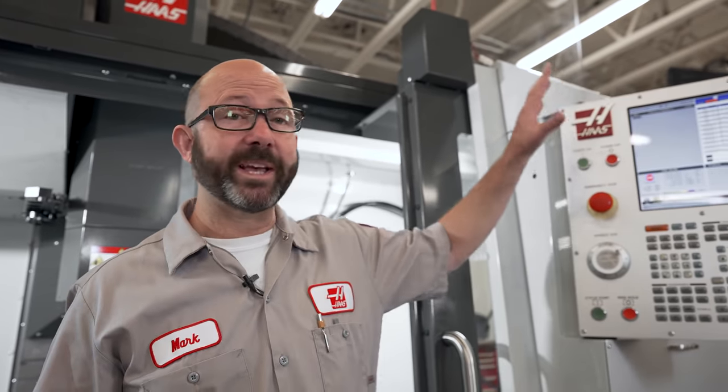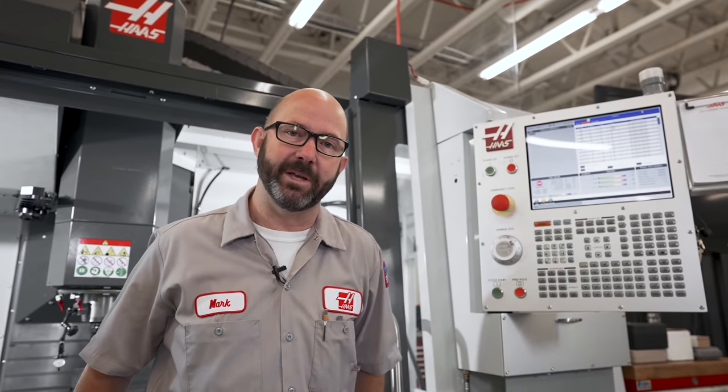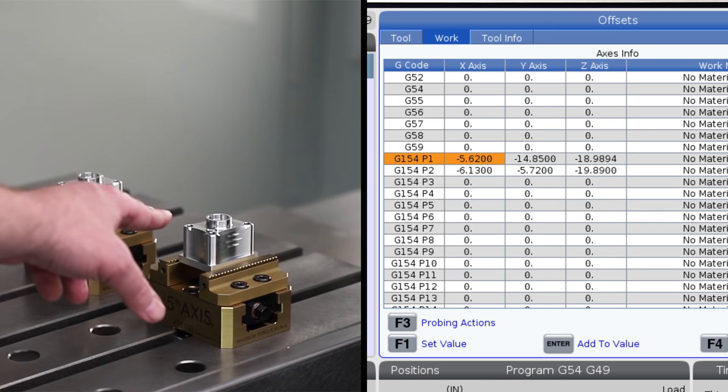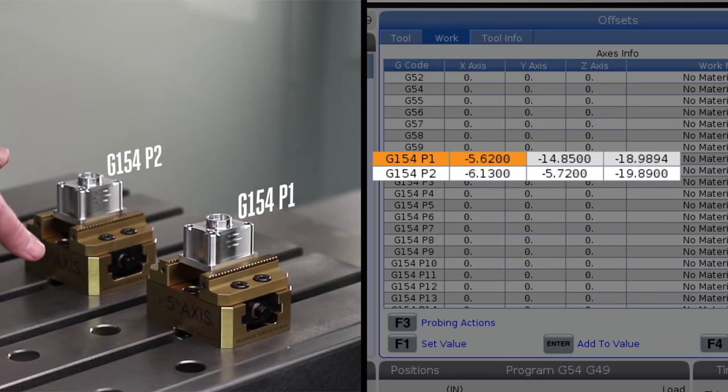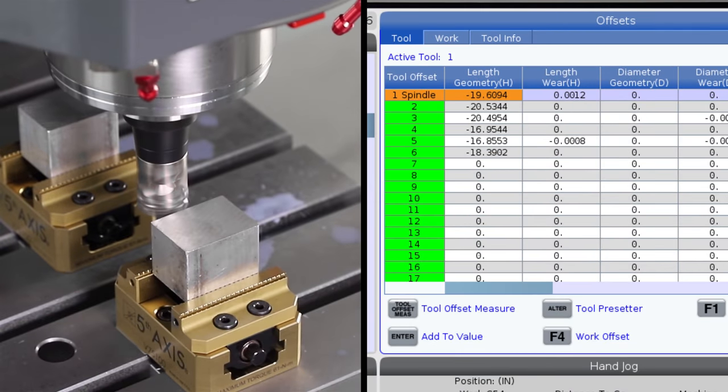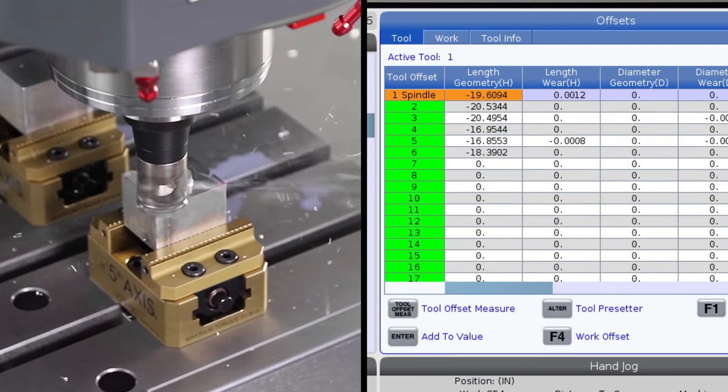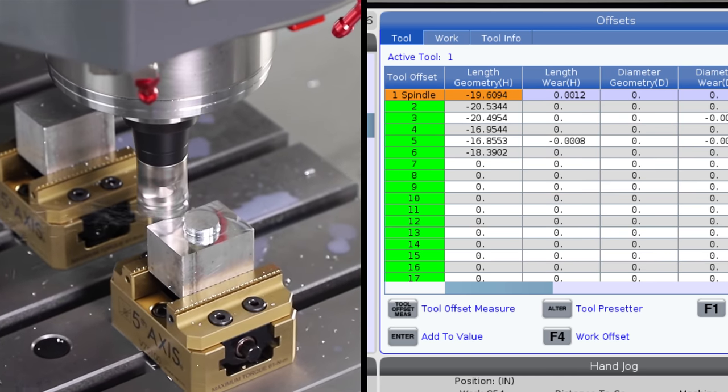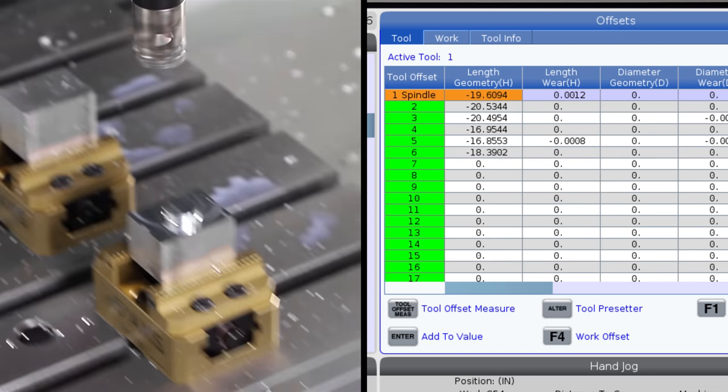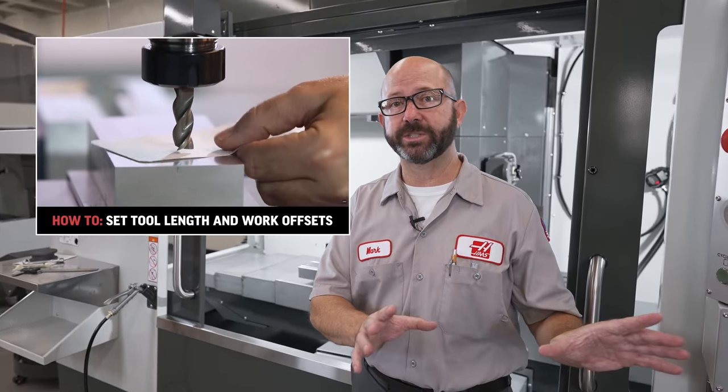Our offset pages rest at the very heart of our CNC mills. They are how the machine knows exactly where our part is on the table and how we let the control know exactly how long each tool is and where the top of our part is in the Z-axis.